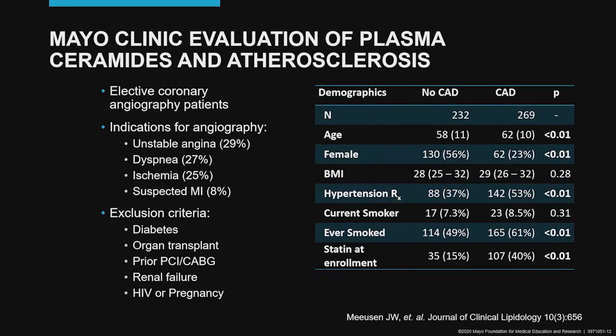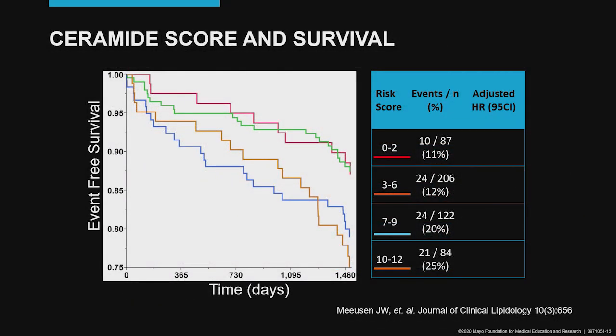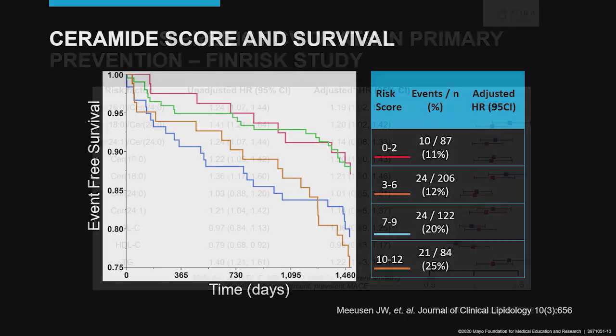We at Mayo Clinic implemented in clinical practice the ceramide score several years ago. This consists of four ceramides, of which three are of biological interest and the fourth is used for normalization. For clinical validation, we used a cohort of patients with established coronary artery disease by elective coronary angiogram. We determined four categories of risk defined by the ceramide score, such that a ceramide score of 0 to 2 confers low cardiovascular risk, while a ceramide score of 10 to 12 confers very high cardiovascular risk.